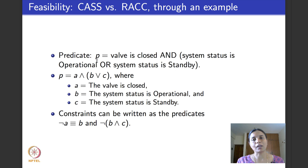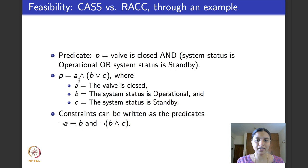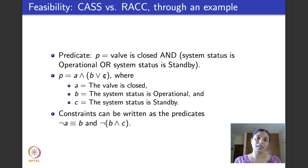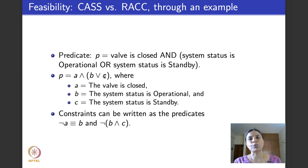Substituting A for 'valve is closed', B for 'system status is operational', and C for 'system status is standby', the predicate P becomes: A AND (B OR C). This is precisely the predicate we worked with in the last lecture when we examined correlated and restricted active coverage criteria, and we had already derived its full truth table.